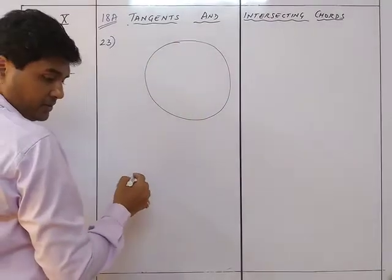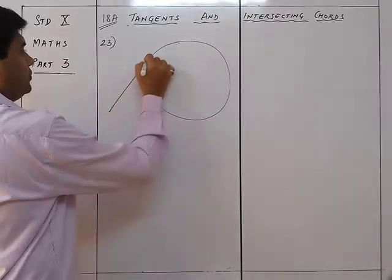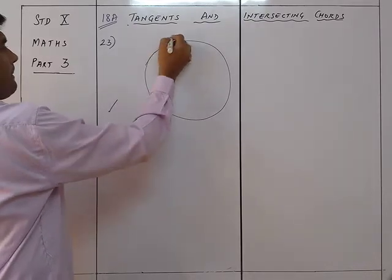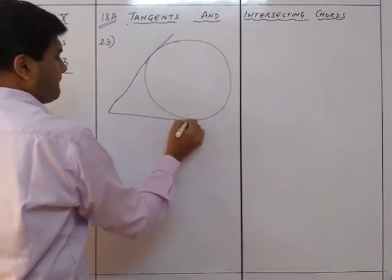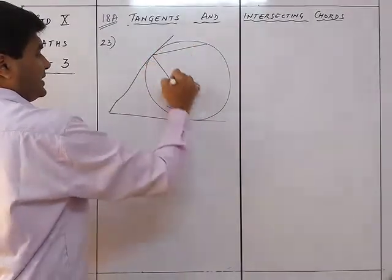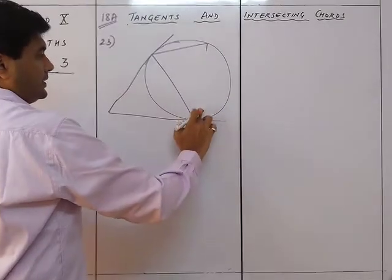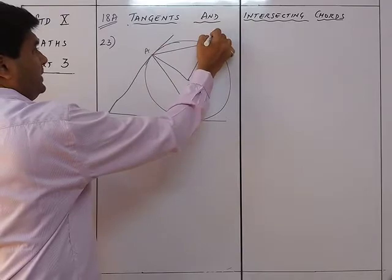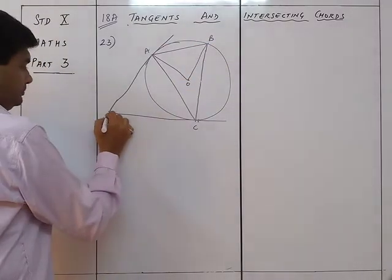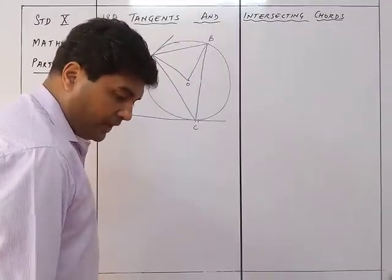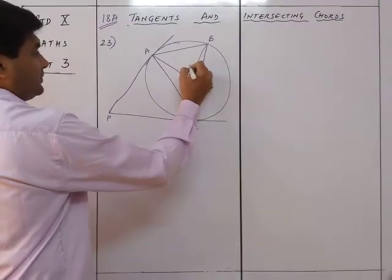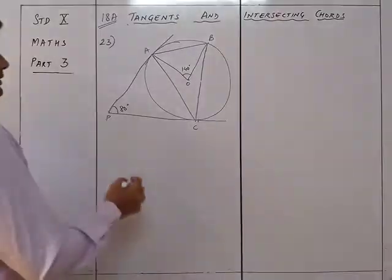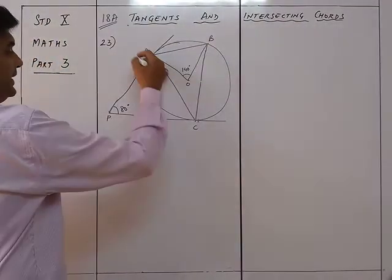We have a circle with a point P giving two tangents. We have lines connected to form points A, B, O, C, and P. Given that angle AOB is 140 degrees and angle APC is 80 degrees, we need to find angle BAC.